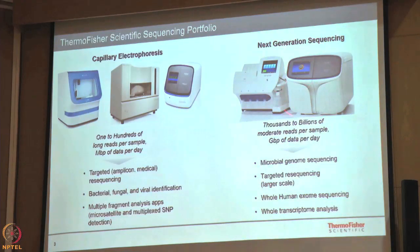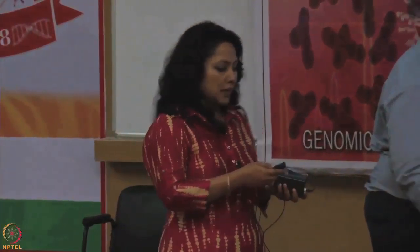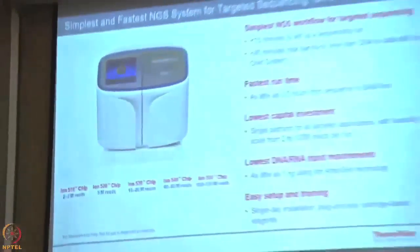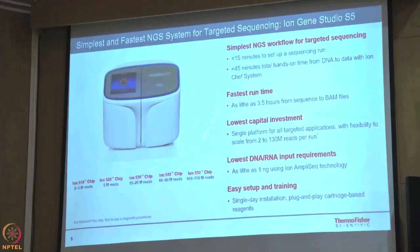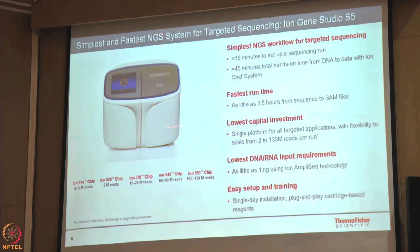Next generation sequencing is what we are here to talk about today, where thousands to billions of reads are produced per run and data is generated in MBs and GBs. NGS can be applied to metagenomics, microbial sequencing, RNA-seq, exome sequencing, transcriptome sequencing, and targeted sequencing. This is the Ion Gene Studio S5, which has 5 different chips giving versatility from producing 2 million to 130 million reads — a very important feature.